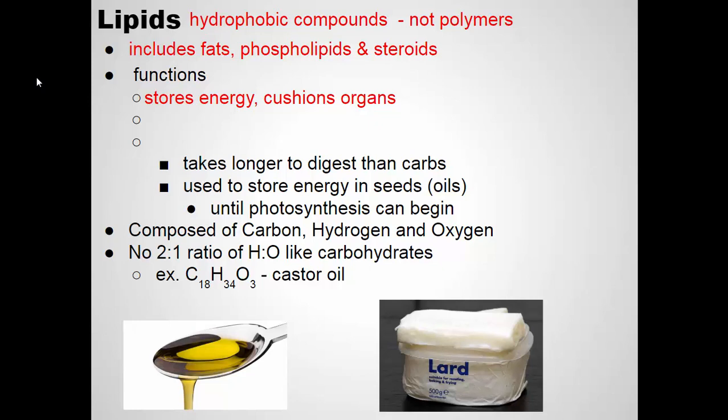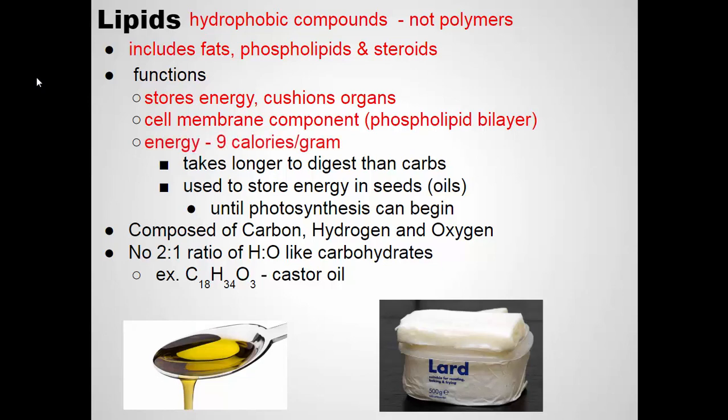We have fats that surround our organs, helping to cushion. The cell membrane is what's called a phospholipid. Lipids also store energy. Fats contain the most energy per gram — 9 calories for every gram. However, they take longer to digest and are not as quick to mobilize as carbohydrates. Lipids are often used in seeds to store energy while the seed is germinating, until photosynthesis can take over for energy production.